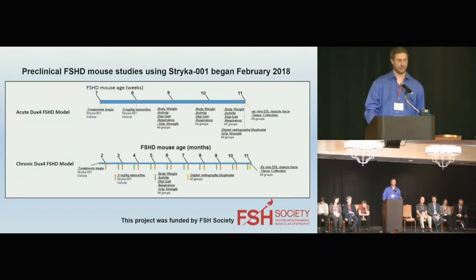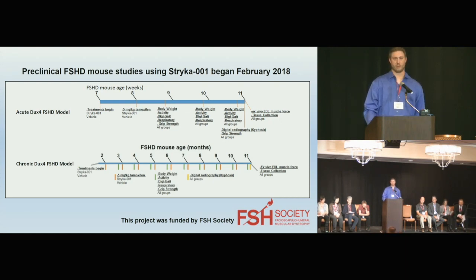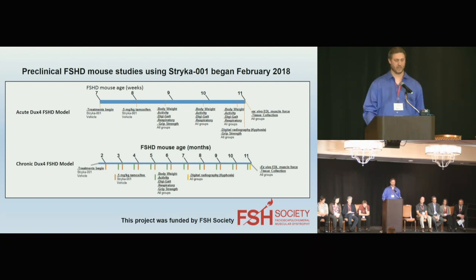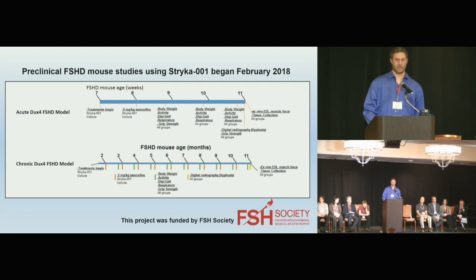Two studies have been set up — a short-term and a long-term study — funded by the FSH Society, using the FlexD FSHD mouse model created by Dr. Peter Jones. In the short-term study, treatment with STRIKA-001 begins at seven weeks of age, DUX4 expression is induced with tamoxifen at eight weeks, and assessments are made at 11 weeks. The chronic model uses multiple rounds of tamoxifen injection to mimic the plateau and cliff effects experienced by FSHD patients.